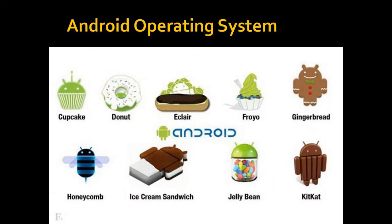Next we want to take a look at the Android operating system. As you can see, there have been many different variations of the Android operating system. Currently the latest one on the majority of Android phones is the KitKat version, but Jellybean is also on a lot of the older ones.